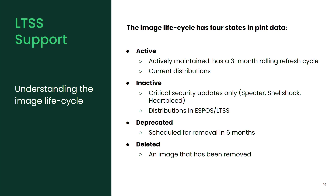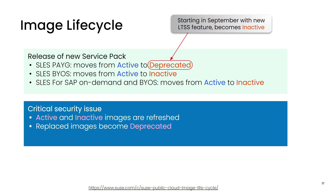Deprecated images get deprecated six months before their lifecycle ends, and then deleted images have been removed. Why do you need to know those four terms? Because we actually tell you this information with a tool called Pint, and it is also published in the documentation. So service packs active — 12 and 15 SP5 at the moment. When images get refreshed, the previous image gets deprecated immediately. If it's just a regular refresh, the old image is no longer maintained — it gets deprecated and then six months later it gets deleted.